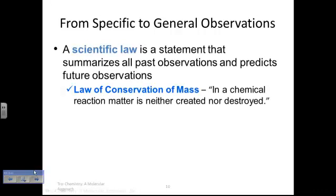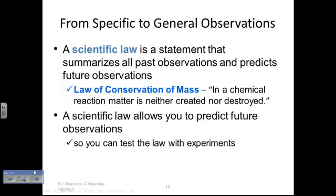From specific to general observations, we call a scientific law. It is a statement that summarizes all past observations and predicts future observations. For instance, the law of conservation of mass: In a chemical reaction, matter is neither created nor destroyed. We simply rearrange atoms as reactants turn to products. There is no such thing as actually destroying matter. I know in a nuclear reaction we actually do destroy matter and turn it into energy, but in an ordinary chemical reaction where bonds are simply breaking and new bonds are forming, we do not create nor destroy.